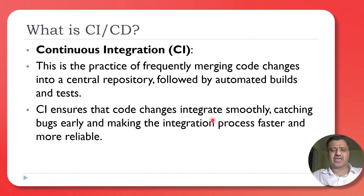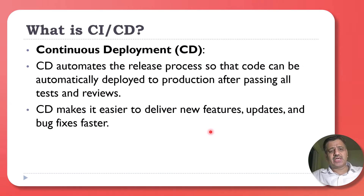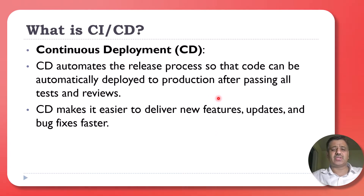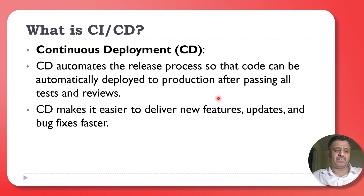This ensures that code changes integrate smoothly, catching bugs early and making the integration process faster, reliable and automated. Continuous deployment, on the other hand, automates the release process so that code can be automatically deployed to production after passing all the tests and reviews.